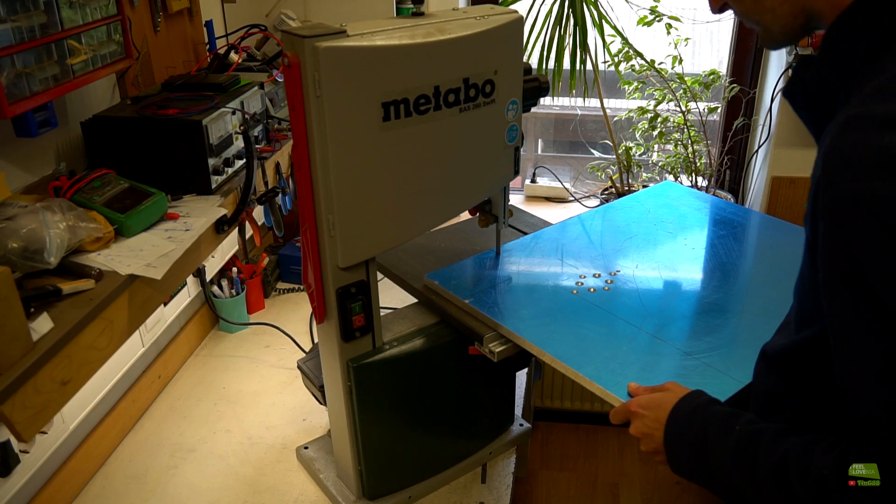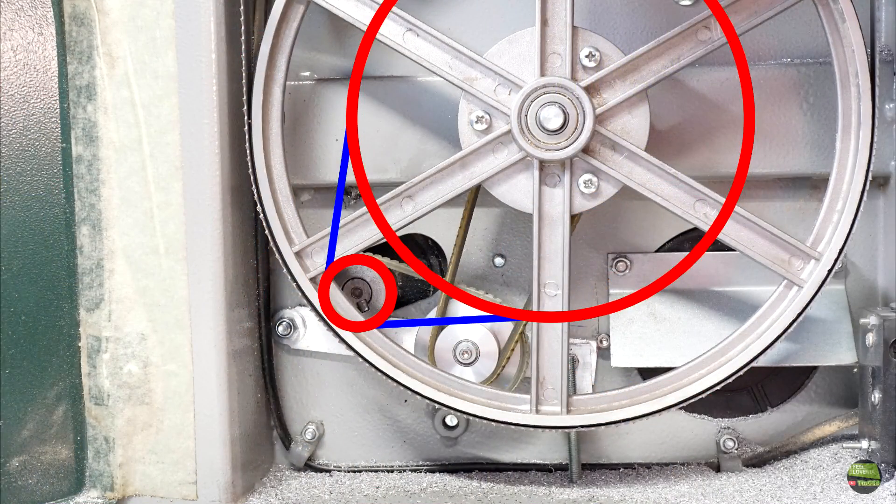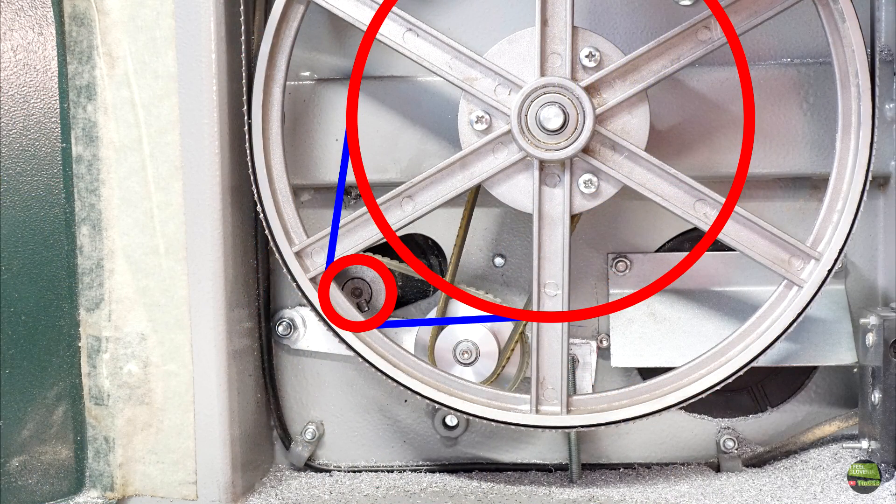Otherwise there's one more option: to order a really big pulley and belt, then use a single belt from the small motor pulley to the big wheel pulley.